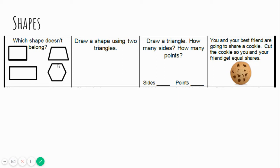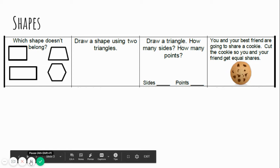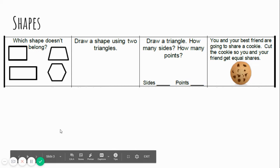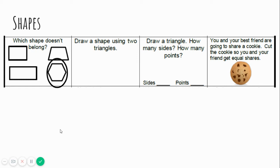This shape has one, two, three, four, five, six sides. That's a hexagon. So which shape doesn't belong? Three of the shapes are quadrilaterals and the other shape is not. Great job. The hexagon has six sides, so it doesn't belong.